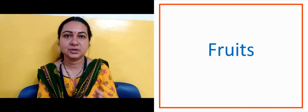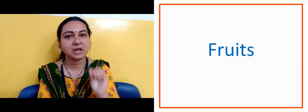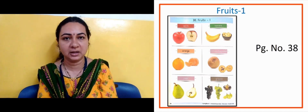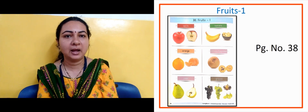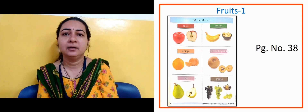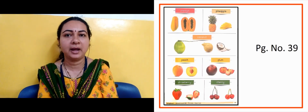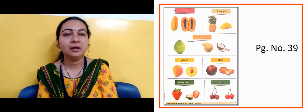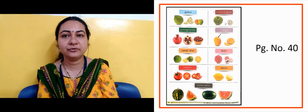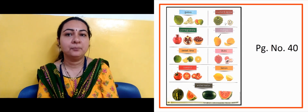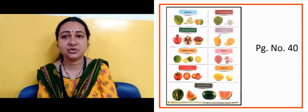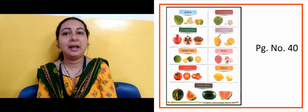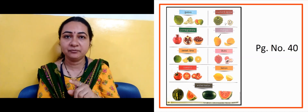Now the next slide is on fruits. We will look at pages related to fruits — identify each fruit along with me. Fruits page 38: apple, banana, orange, chiku, pear, grapes. Page 39: papaya, pineapple, coconut, peach, plum, strawberry, cherries. Page 40: guava, custard apple, pomegranate, mango — mango is our national fruit — sweet lime, litchi, tomato (tomato can also be used as a vegetable), lemon, and watermelon. Identify all these fruits.